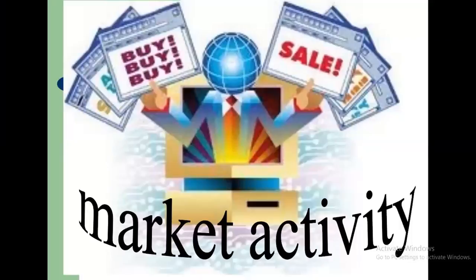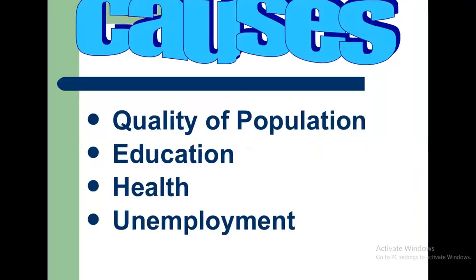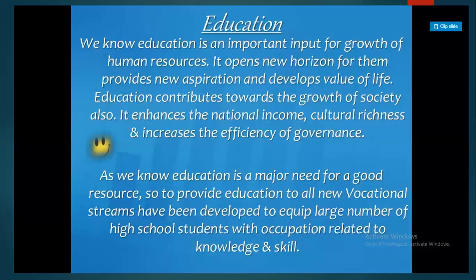Then we have seen the difference between market and non-market activities. Market means work done for pay or profit. Non-market means work done for self-consumption, which is why it is called non-market. Then we have seen the quality of population — education, health, and employment. The quality of population can be improved by giving proper literacy rate, increasing life expectancy, and providing education. Not only theoretical but also practical and vocational streams are introduced by the government so that people get proper education to help the growth of the economy.